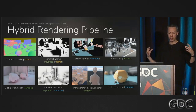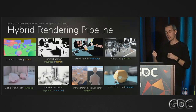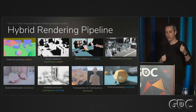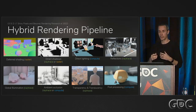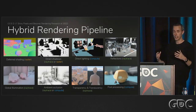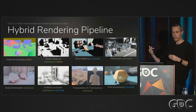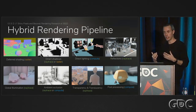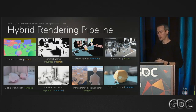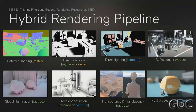We end up with this fairly hybrid pipeline of how everything connects, which is exactly what we wanted to explore — what's the right solution for shadows, reflections, and translucency in this specific demo. We believe this is not necessarily the final answer. As hardware evolves and community contributions and learning evolve in this area, we'll probably change things around, but we want to start exploring it.